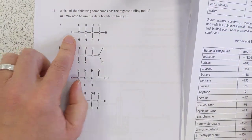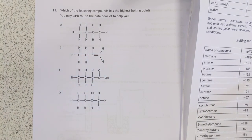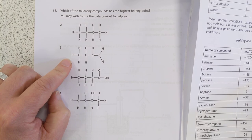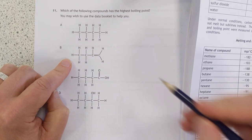We've got butane here. It's the boiling point we care about. So butane boils at minus one. This is butene. But-1-ene, to be exact. But-1-ene boils at minus six. So minus one, minus six.